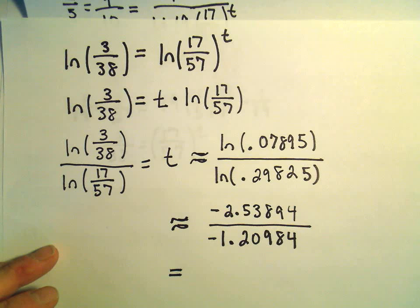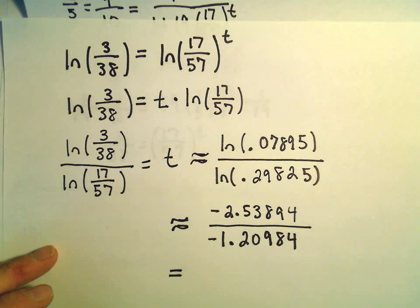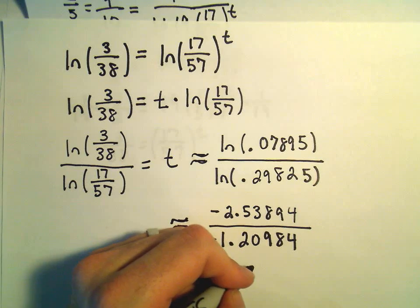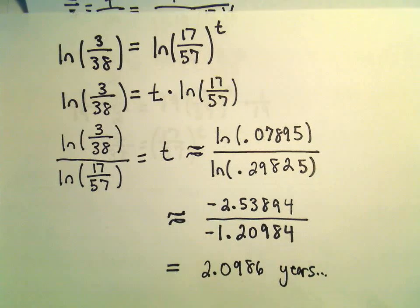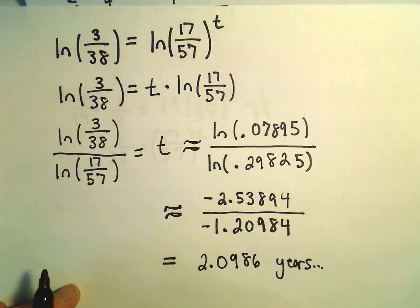And now we can simply divide these two numbers. So if we divide 2.53894, okay, we've done the hard part at this point. I've typed it in wrong. So if we divide that by 1.20984, I'm getting the value 2.0986 years. Which is probably a little more accuracy than we really need. So it says it's going to take a touch over two years for this fish population to reach 4,000.